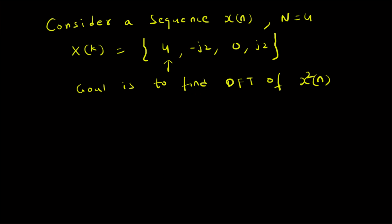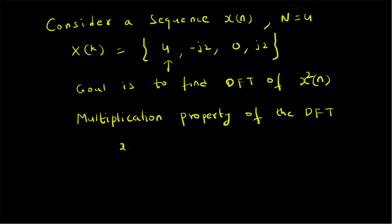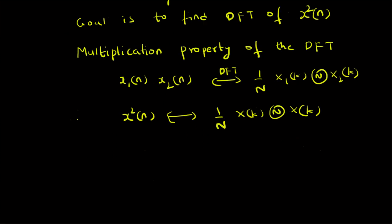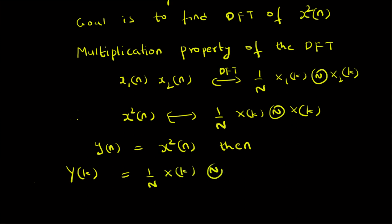To solve this problem we are going to make use of the multiplication property of the DFT. Recall that the multiplication property states that x1(n) multiplied by x2(n) has a DFT which is the circular convolution of the corresponding DFTs, that is X1(k) circularly convolved with X2(k). Since x1 and x2 are both equal to x(n), for the signal x squared of n the corresponding DFT is given by (1/N) times the circular convolution of X(k) with X(k).